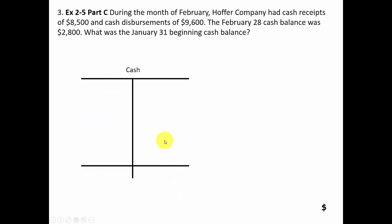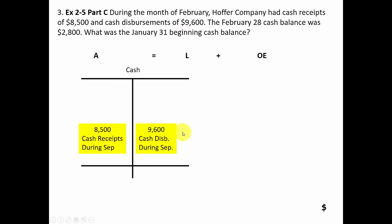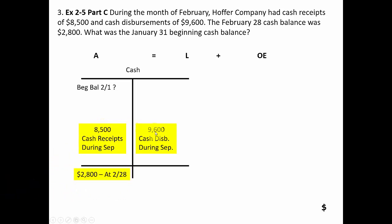Number three: analyzing another cash account for February. Cash receipts were eighty-five hundred dollars, cash disbursements were ninety-six hundred dollars, and the February 28th ending cash balance was twenty-eight hundred dollars. During the month, cash went up eighty-five hundred and down ninety-six hundred, so overall it went down by eleven hundred dollars. Therefore the beginning balance is eleven hundred dollars higher than the ending balance — the beginning balance is thirty-nine hundred dollars.